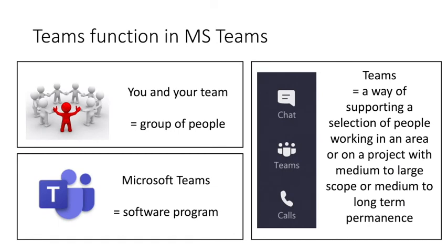Now, the Teams function in MS Teams. In MS Teams, the word 'team' is used in three different ways. The first is the usual use of the word team - a group of people, you and your team. Next, we have Microsoft Teams, shown here with the blue icon - that's the software program. Finally, within Teams, we have uppercase Teams: Teams is a way of supporting a selection of people working in an area on a project that has medium to large scope or medium to long term permanence.